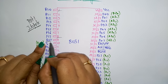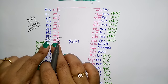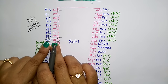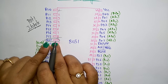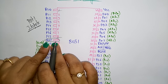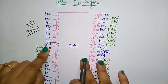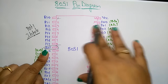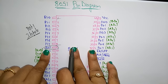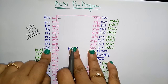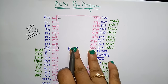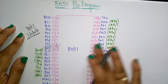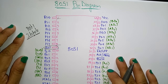Now coming to pin 9. Pin 9 is RST — that is the reset pin. It is used to reset the microcontroller to its initial value. Whenever you make reset equal to 1, all the microcontroller instructions are reset to their initial values.